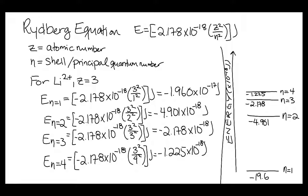And so what we have done in this video is we calculated what the energy levels are of the different shells within a lithium 2 plus ion using the Rydberg equation. And then from that, we were able to generate an atomic orbital energy diagram for that ion.